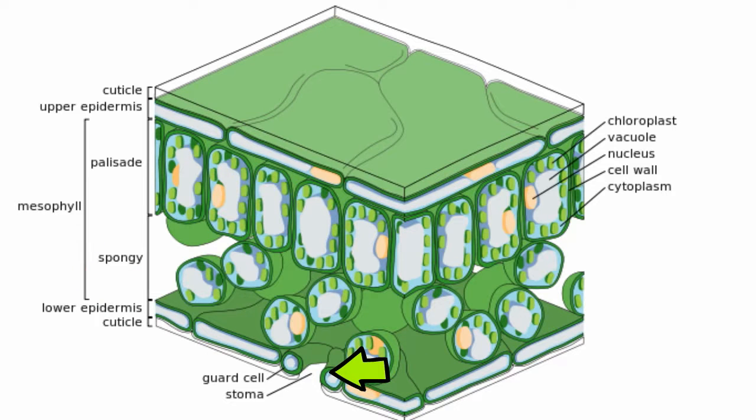Underneath the leaf you have stomata, and they are tiny pores that open for carbon dioxide to enter and oxygen can escape.